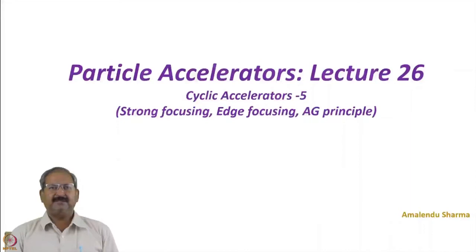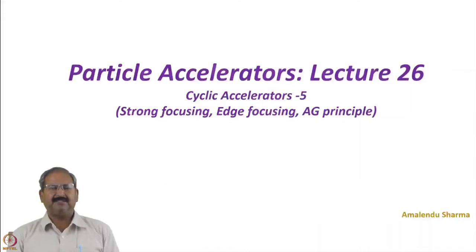In the last lecture we learned about weak focusing — we derived an equation of motion for charged particle motion in a dipolar magnetic field with a gradient. We also learned about geometric focusing, where the shape of the sector dipole magnet focuses in the horizontal plane. There are other types of focusing available: strong focusing and edge focusing. Based on strong focusing, there is the alternate gradient (AG) principle, used in synchrotrons and transfer lines.